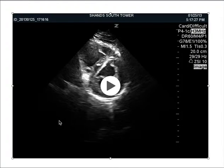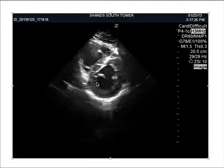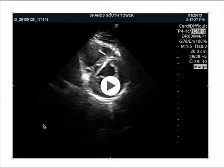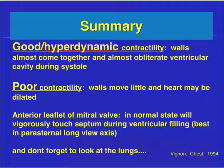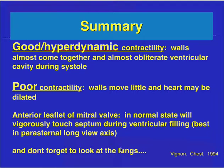To close out: here's a good normal short axis view with papillary muscles visible. Remember, you're looking for hyperdynamic or poor contractility. Short axis papillary muscle level is preferred, but long axis can also be used. Don't forget to look at the lungs — that's one of the most important things. You can also assess the inferior vena cava and CVP, using LV function as just one component of the full patient evaluation.